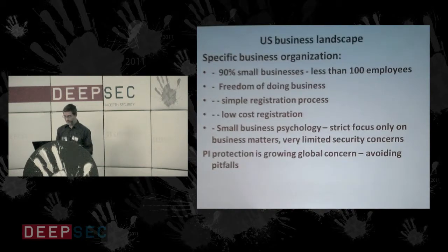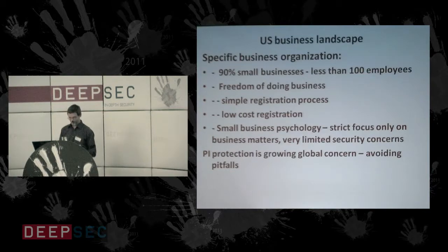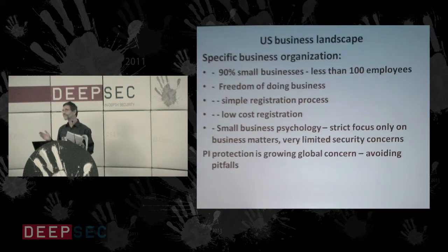The U.S. is a country of small businesses. By available statistics, 90% have fewer than 100 employees. The cost of opening a business could be as low as $50 for a three-year registration, and registering a corporation is a few hundred dollars and half an hour. Most businesses are not strictly regulated, and in the case of imposing regulations like information security, such regulations will basically be ignored. We name this small business psychology: strict focus only on business matters, and whatever lies outside and is required by government — ignore it if possible.